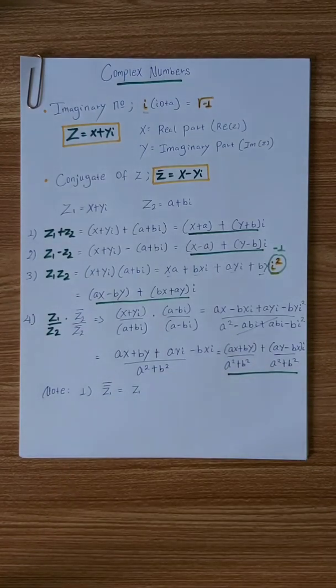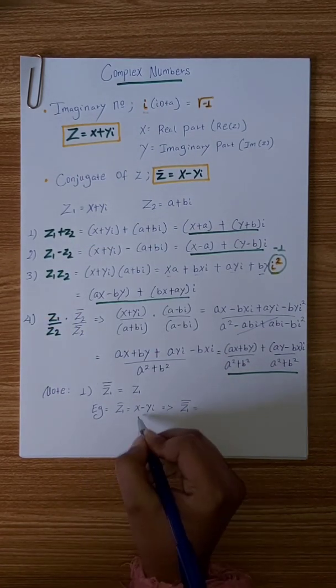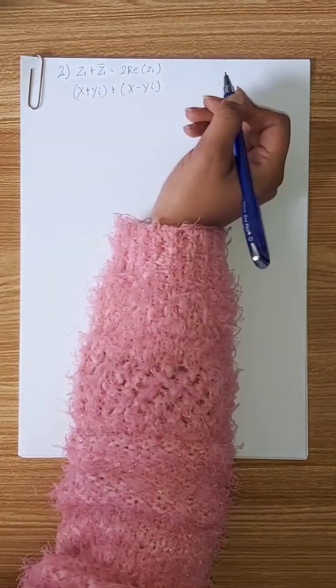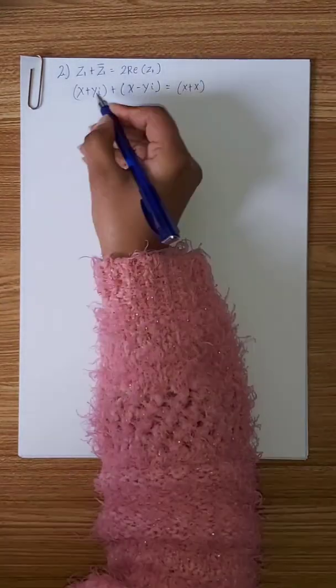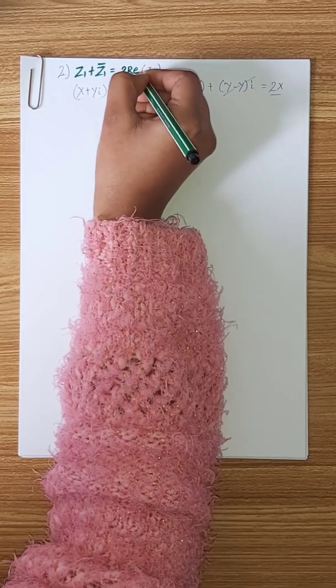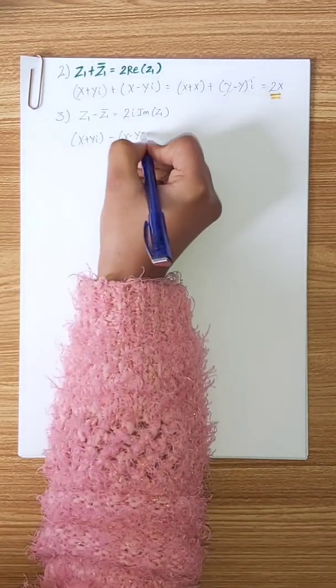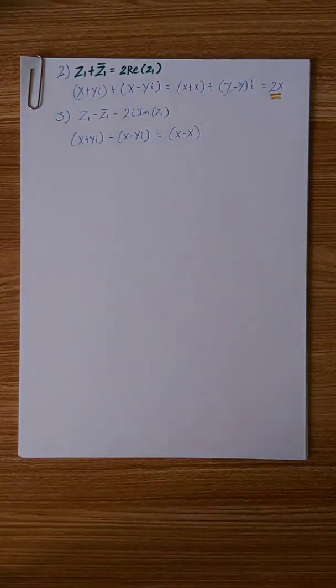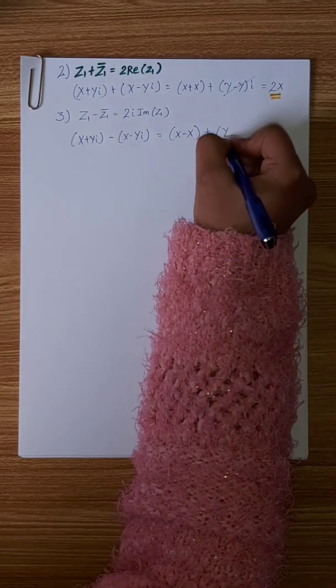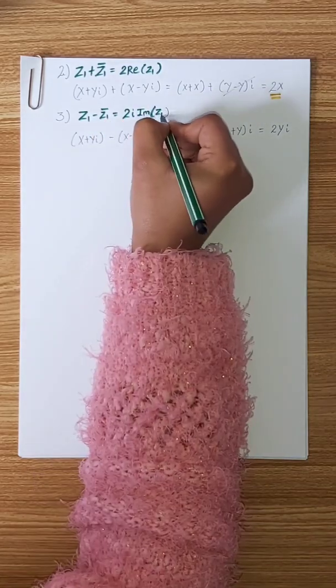Z1 has a double conjugate. For example, Z1 = x plus yi has a double conjugate. The sum of z and its conjugate gives 2 times the real part of Z1. The difference gives 2 times i times the imaginary part of Z1.